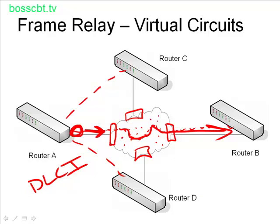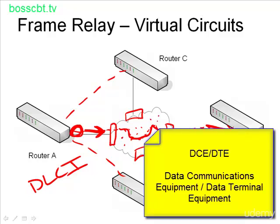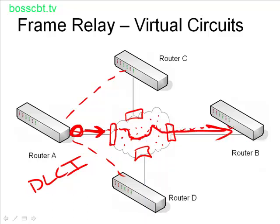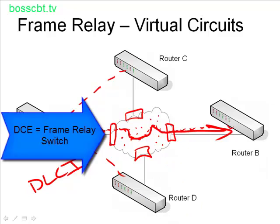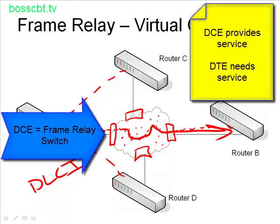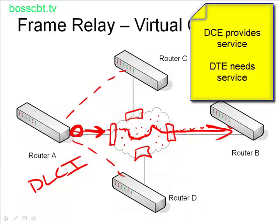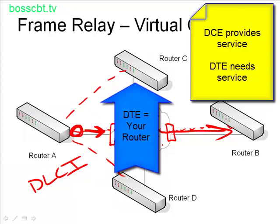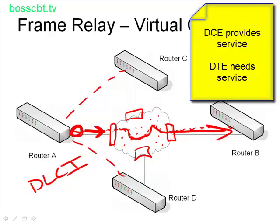A final round of terminology to cover: if you looked at the CSU-DSU tutorial, you were introduced to DCE and DTE — the Data Communications Equipment and Data Terminal Equipment. It comes up again in the Frame Relay conversation. The DCE is your Frame Relay switch because it is providing the Frame Relay services, and the DTE is going to be your router because that is the device that needs and is receiving the service.